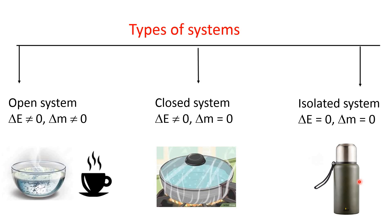These are the three types of thermodynamic system: open system, which can exchange both mass and heat energy with the surroundings; closed system, which can exchange only heat energy with the surroundings but not matter; isolated system, which cannot exchange neither mass nor heat energy with the surroundings. Hope you have understood. Bye-bye.